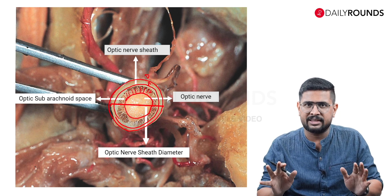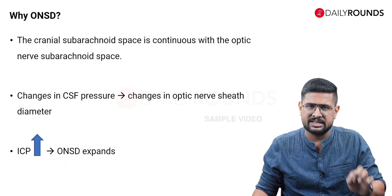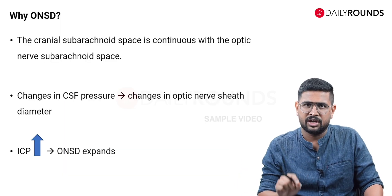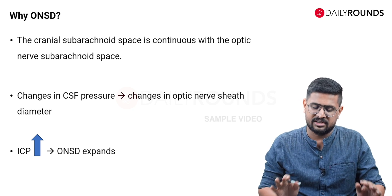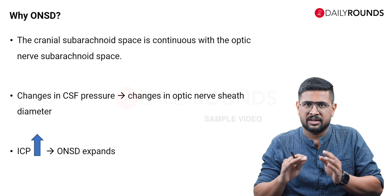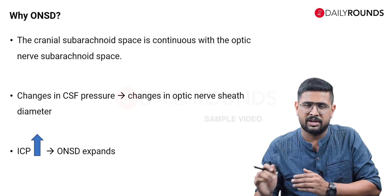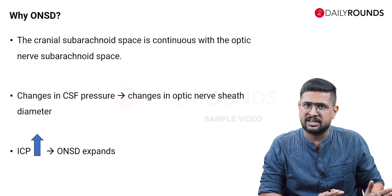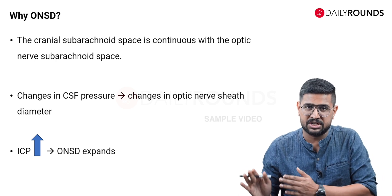I hope that the anatomy is clear now. This is the reason why we look at the optic nerve sheath diameter: because the cranial subarachnoid space continues as the optic nerve subarachnoid space, and any changes in raised ICP will change the optic nerve sheath diameter as well.